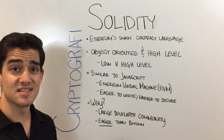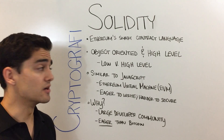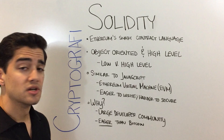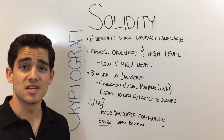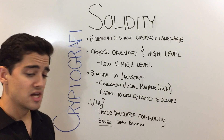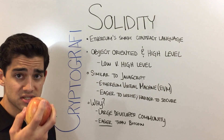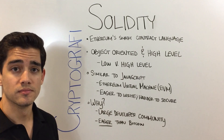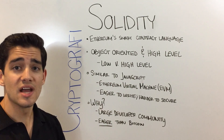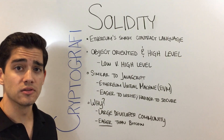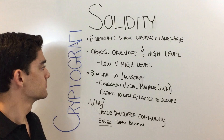Now imagine you take that same nephew a few years later. He understands what an apple is, he understands what a table is, and he just picks it up out of your hand and puts it on the table. That's your high-level language, where you didn't have to define anything — you guys could just speak.